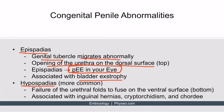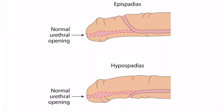Hypospadias is the last condition we'll discuss. It is more common than epispadias and results from a failure of the urethral folds to fuse on the ventral surface of the penis, resulting in an opening on the bottom of the penis. It is associated with inguinal hernias, cryptorchidism, and chordee, which is upward or downward bending of the penis. In this image, the urethra opens on the bottom surface in hypospadias and on the top part in epispadias.